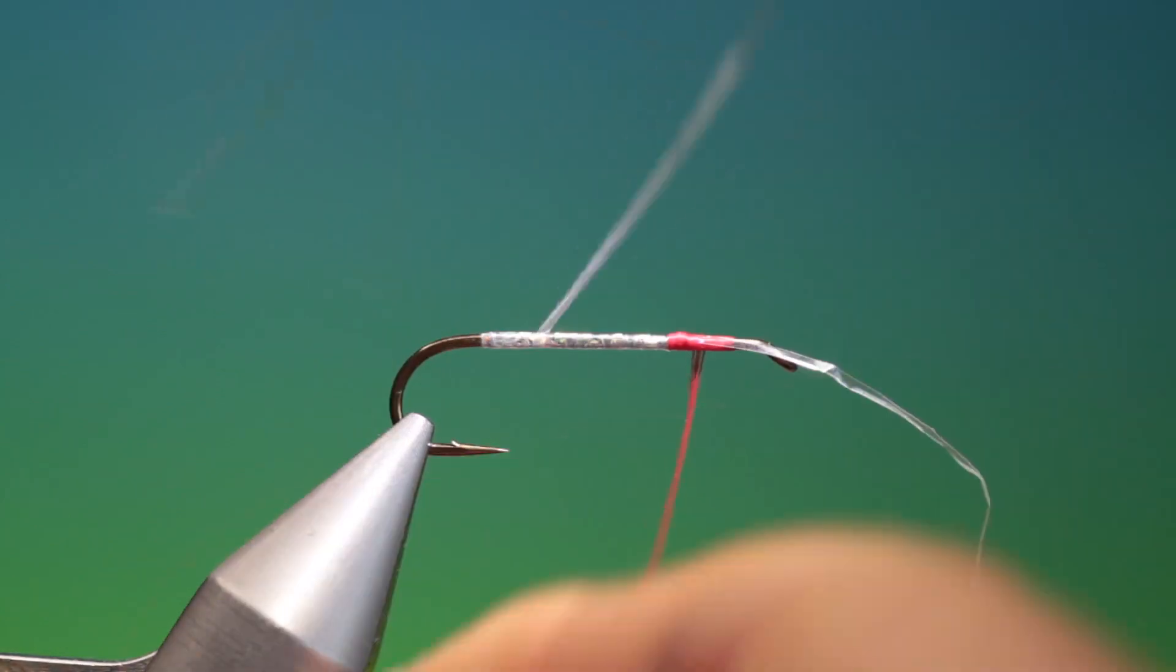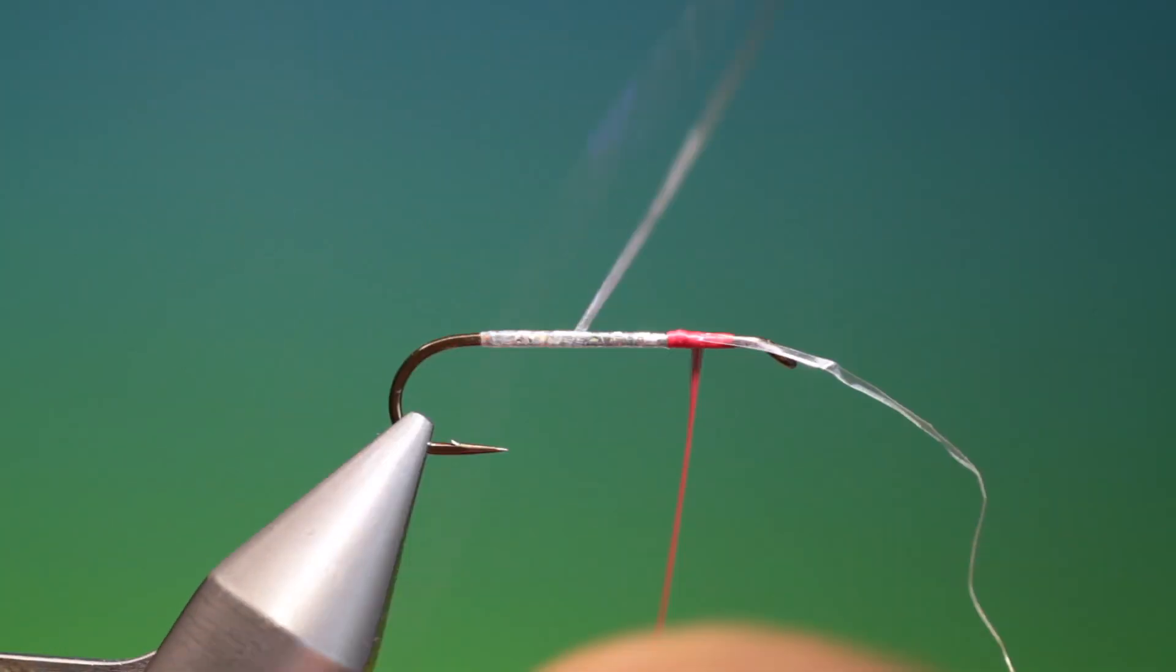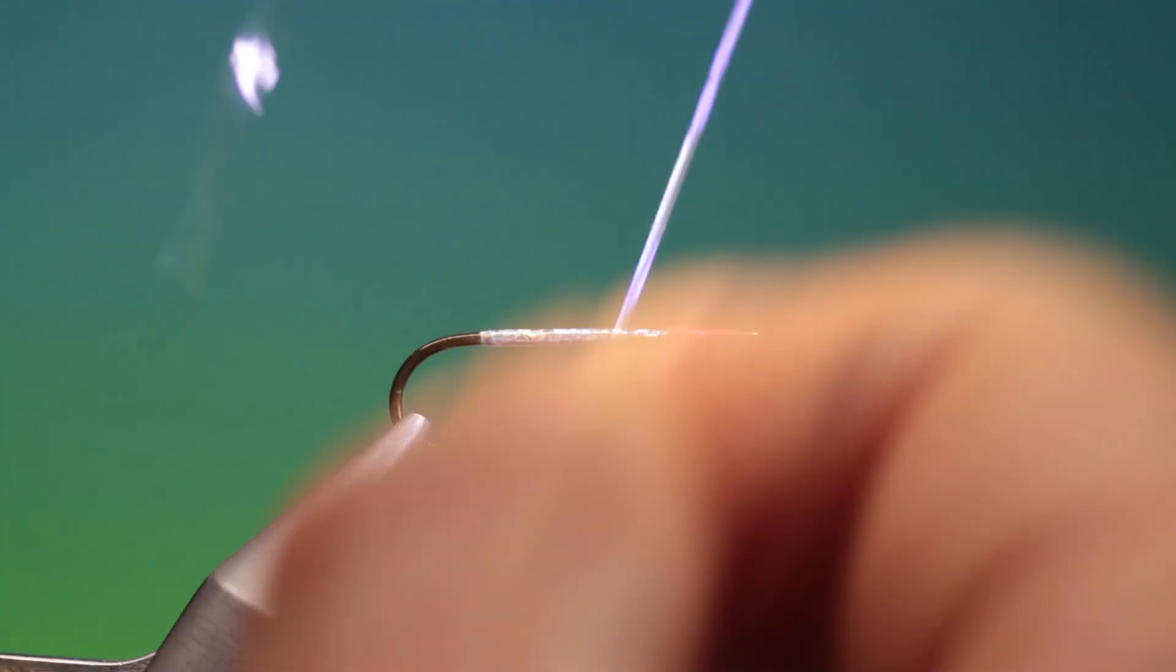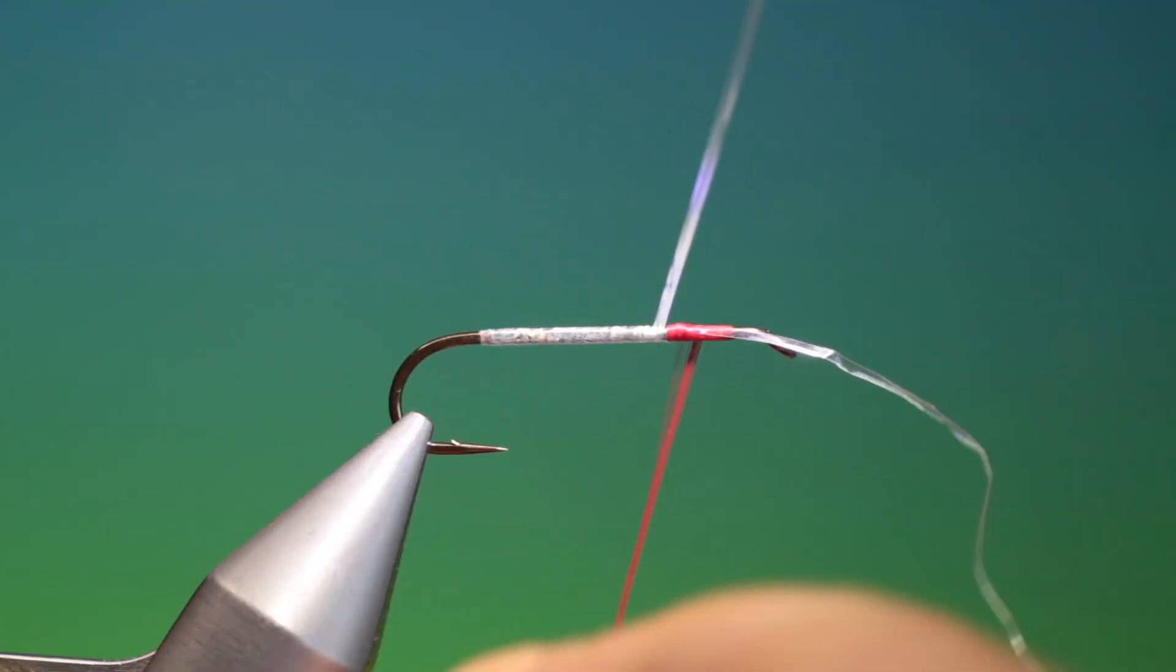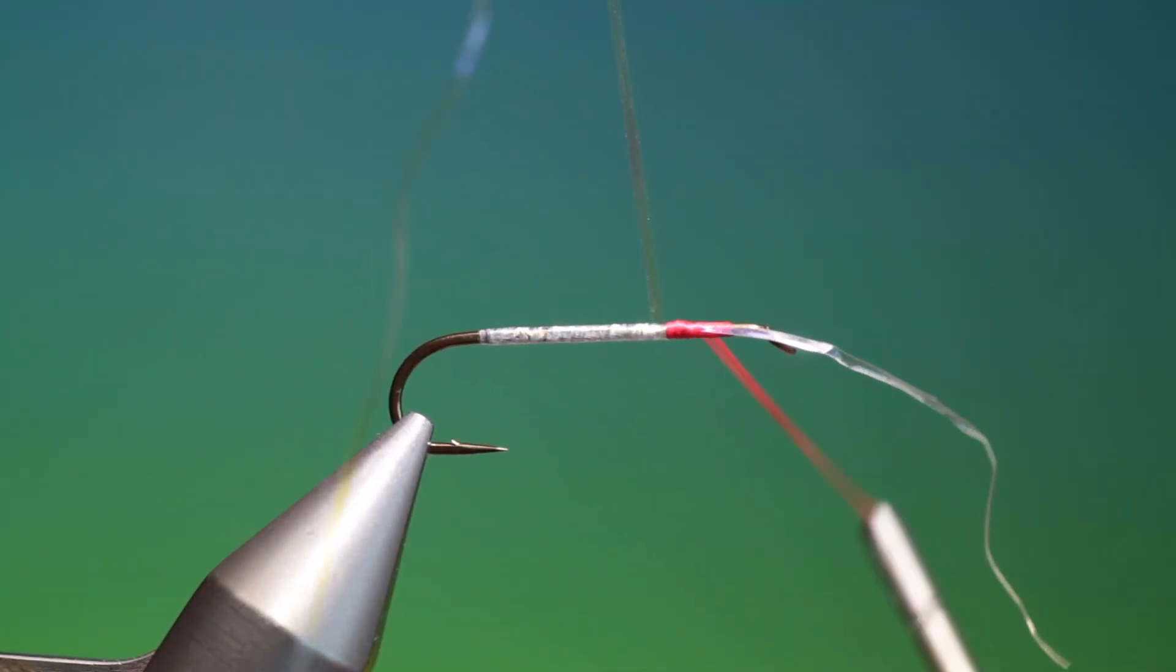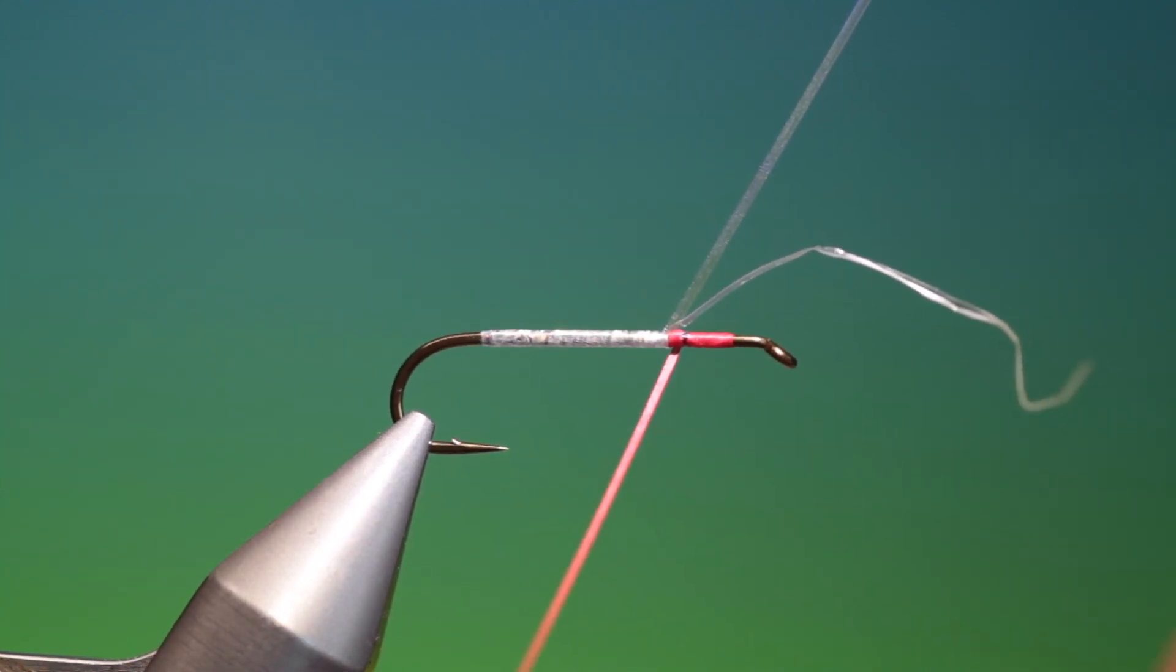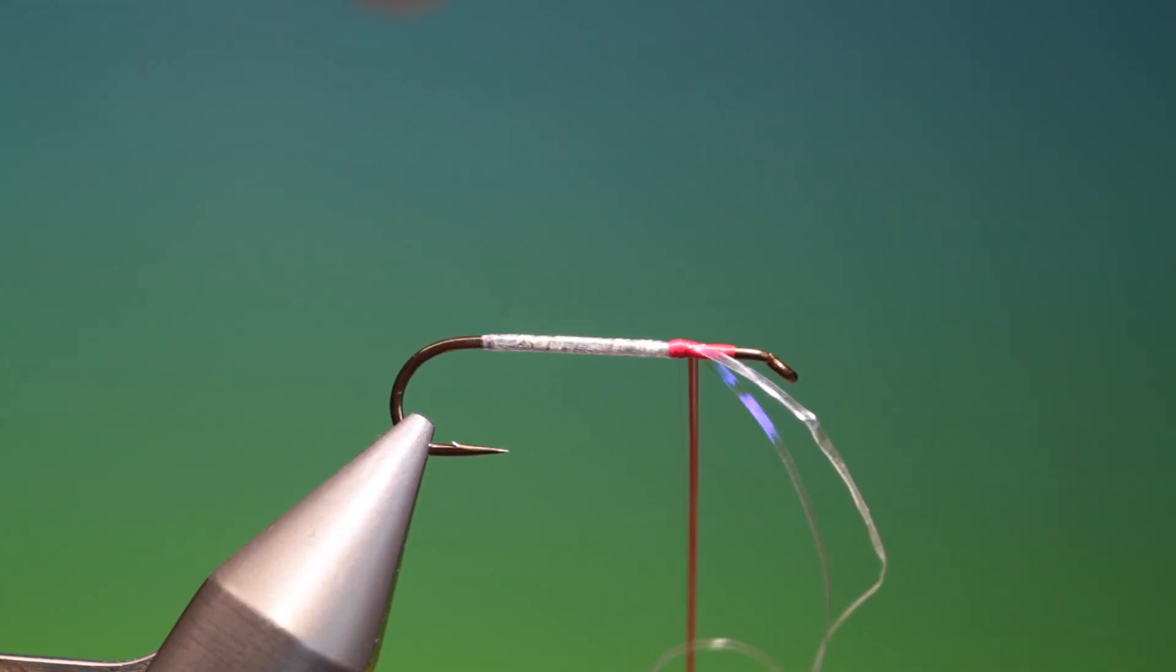And we go back over here again. Over the tinsel and back up. Into the red floss which is to imitate the blood filled gills of a fleeing bait fish. And we can rewrap that again and then we'll tie that in.